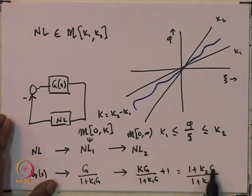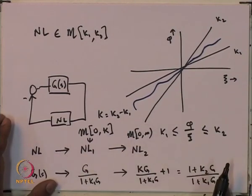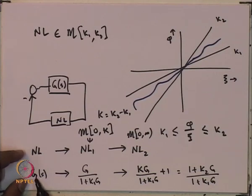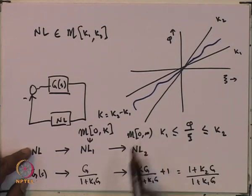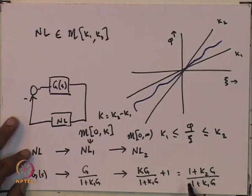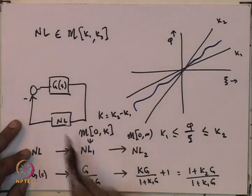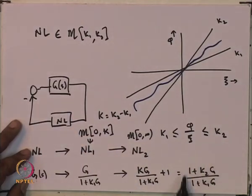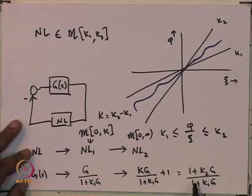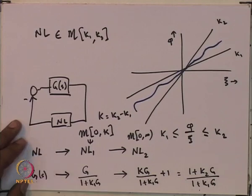If this resulting plant (1 + k2·G)/(1 + k1·G) is passive and stable — in other words, if the Nyquist plot of this new transfer function lies in the right half plane and it is stable — then this interconnection is asymptotically stable, and that translates to the original interconnection being asymptotically stable.